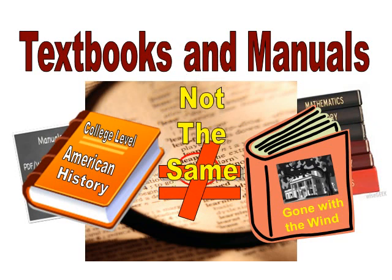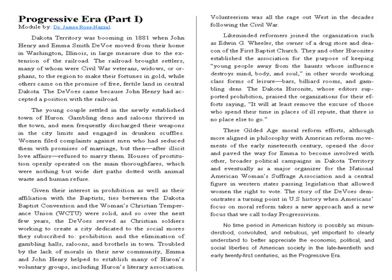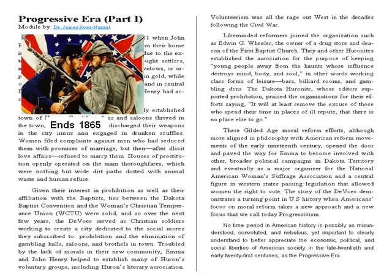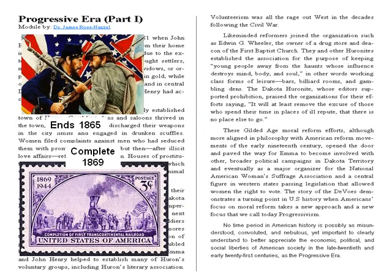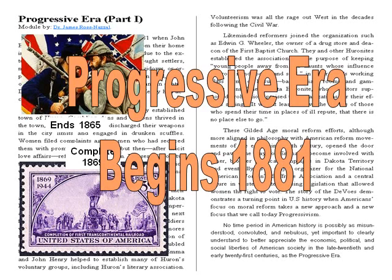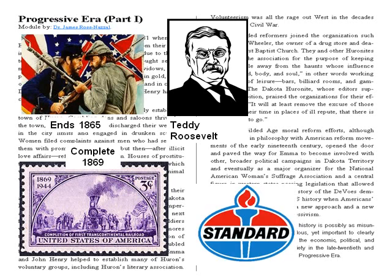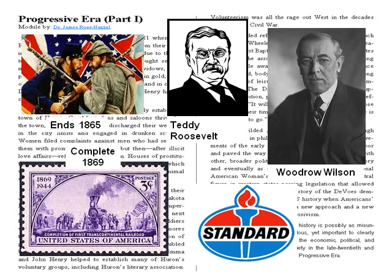I have found a contemporary historian's account online of America's Progressive Era, written by history professor Dr. James Ross Nazel. This period begins shortly after the Civil War in 1865 and the completion of the transcontinental railroad in 1869. The generally cited start date is 1881. The Progressive Era continues into the 20th century and includes well-known figures such as Teddy Roosevelt and companies such as Standard Oil. It concludes at the end of President Woodrow Wilson's administration in December 1921 — just after World War One ended in November 1918 and just as the Roaring Twenties was getting started.